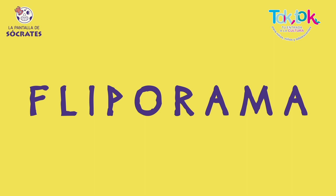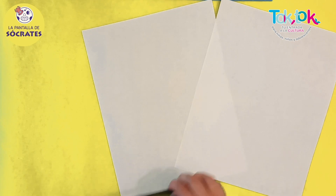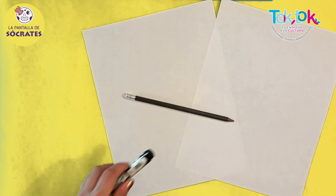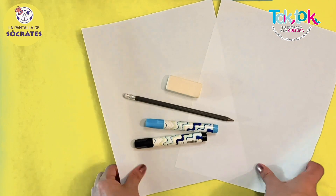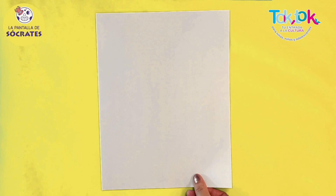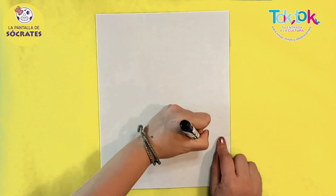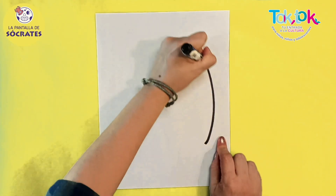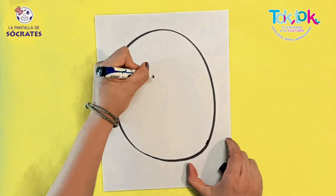Vamos a hacer tu propio fliporama. Necesitas dos hojas, lápiz, plumones, un borrador te puede ayudar y también mucha, mucha imaginación. Vamos a comenzar primero con un dibujo. Yo te mostraré el fliporama de un emoji, pero será un emoji con algunos cuantos detalles más que lo puedan hacer propio, como este que estoy haciendo aquí.